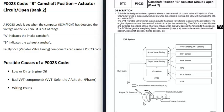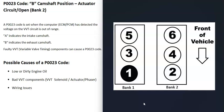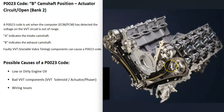When you have a V6 or V8 engine, there are going to be two banks. Bank one is always the side of the engine with the number one cylinder, and the opposite is bank two. If you Google your engine's cylinder location or firing order, that will tell you which side is bank one, and the opposite is bank two.